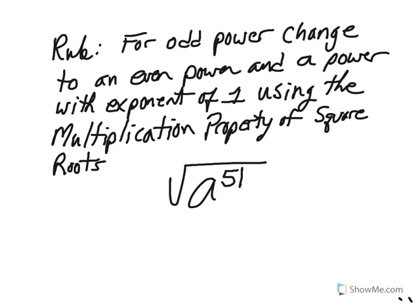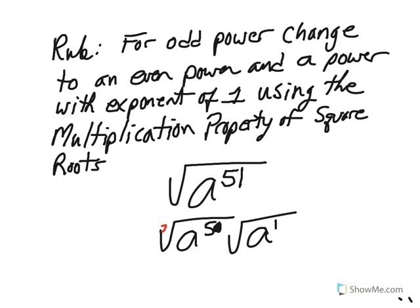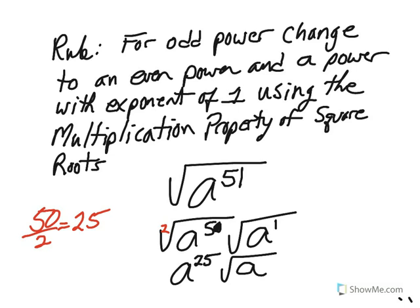To simplify the square root of a to the fifty-first, we're going to change it to an even power, which would be the square root of a to the fiftieth, and the square root of a to the first. We solve the square root of a to the fiftieth by taking the index of 2, dividing it into fifty to give us twenty-five. Therefore, the square root of a to the fiftieth is a to the twenty-fifth. Then we have the square root of a, so our final answer is a to the twenty-fifth times the square root of a.